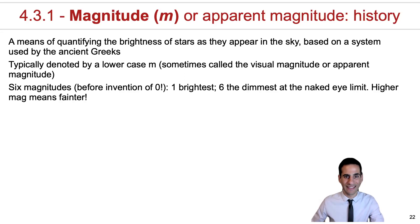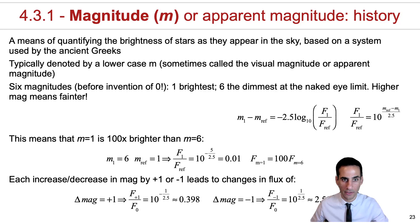The important thing to understand is that because of the system, number one being the brightest, six being the dimmest, then the dimmer you are, the larger the magnitude. So this is where this comes from.